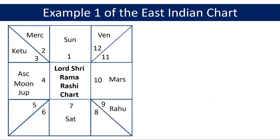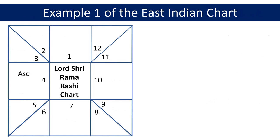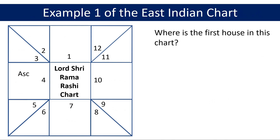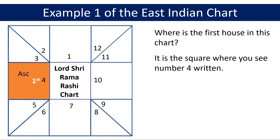Now people always have some confusion when they see numbers written in these houses in the chart, so let's look at a few examples to make that clear. The chart you're seeing on your screen is an East Indian chart for Lord Sriram. Let's get rid of planet names from the chart so we only have the ascendant and numbers left. Where is the first house in the chart — is it where you see number one written, or is it where you see number four written? Since the position of the ascendant or lagna tells you the location of the first house, the first house in this chart is the square where you see ASC and where the number four is written. I have highlighted it on the screen. Going in anticlockwise direction, the second house is where you see number five written — it is the triangle next to the first house square.